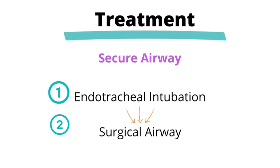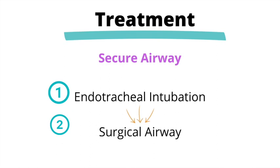The question now is how do we manage these patients? The priority is to secure the airway. The best initial step is endotracheal intubation. However, if that has failed or cannot be done for any reason, then we move on to surgical airways, such as a tracheotomy or a cricothyroidotomy.